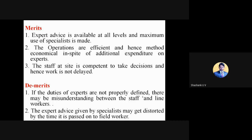The demerits of line and staff organization are: if the duties of experts are not properly defined, there may be misunderstandings between staff and line workers. For example, if an electrical person is assigned civil engineering work or vice versa, it is very difficult to get back to normal. When experts are not working in their own specialized talent, it becomes difficult to execute the further work. Also, expert advice given by specialists may be distorted by the time it is passed on to the field worker.